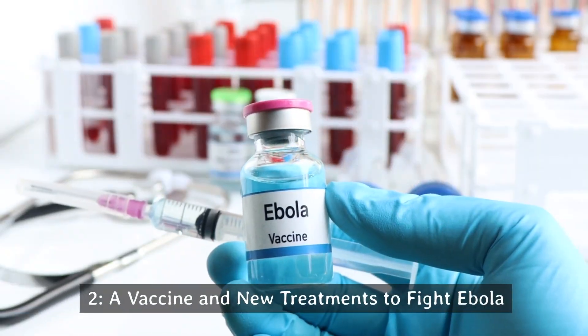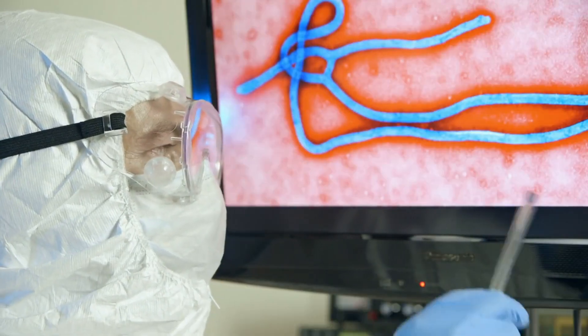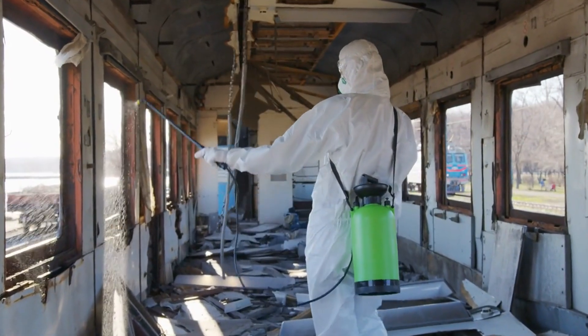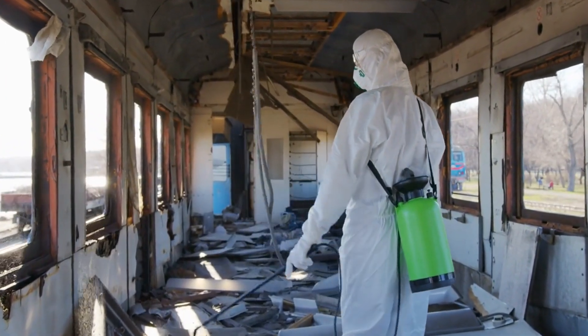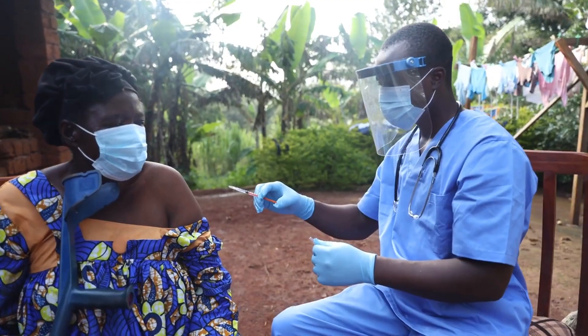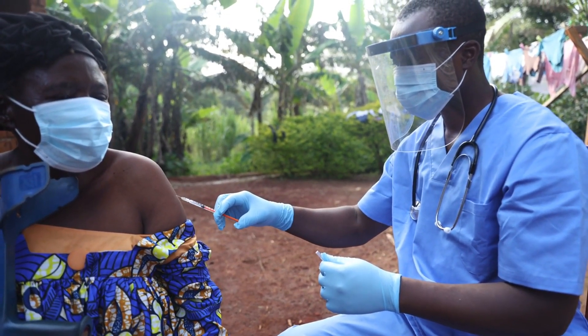Number 2: A vaccine and new treatments to fight Ebola. This decade included the worst outbreak of Ebola virus disease in history. The epidemic is believed to have begun with a single case of an 18-month-old boy in Guinea infected by bats in December 2013. The disease quickly spread to neighboring countries, reaching the capitals of Liberia and Sierra Leone by July 2014.